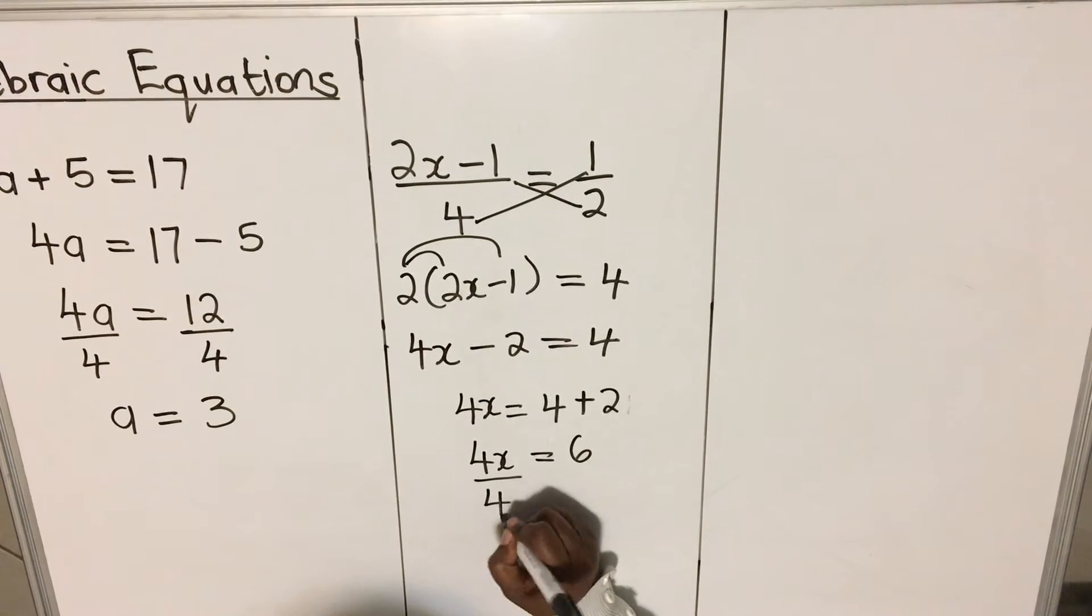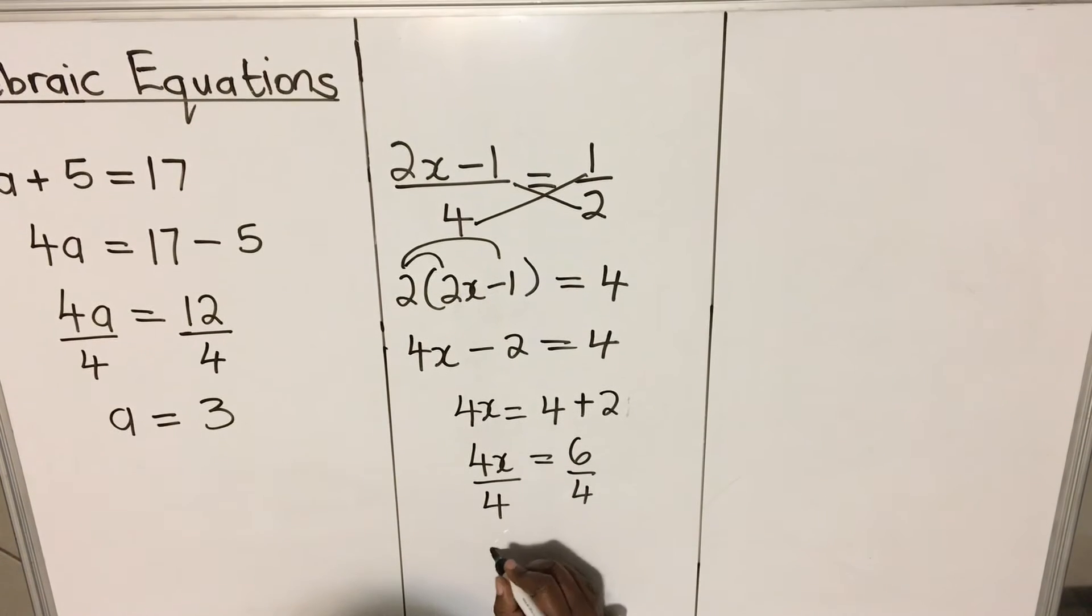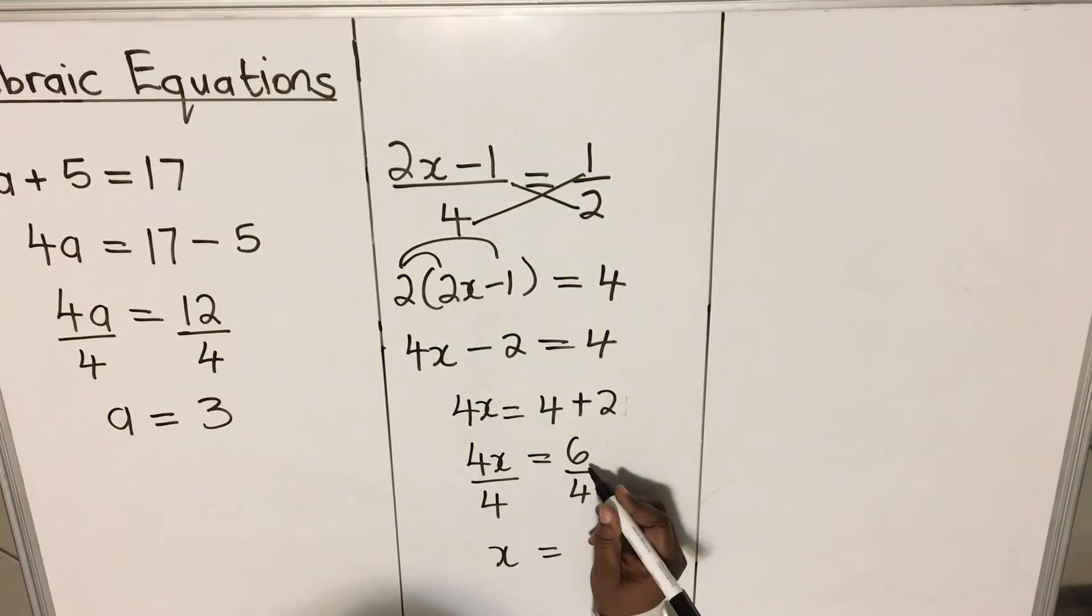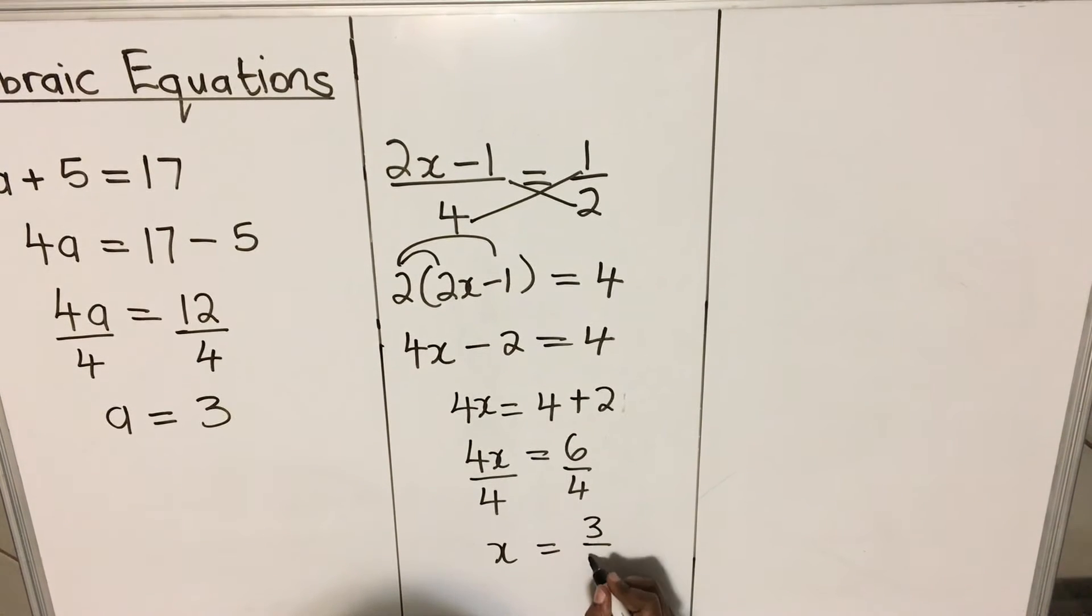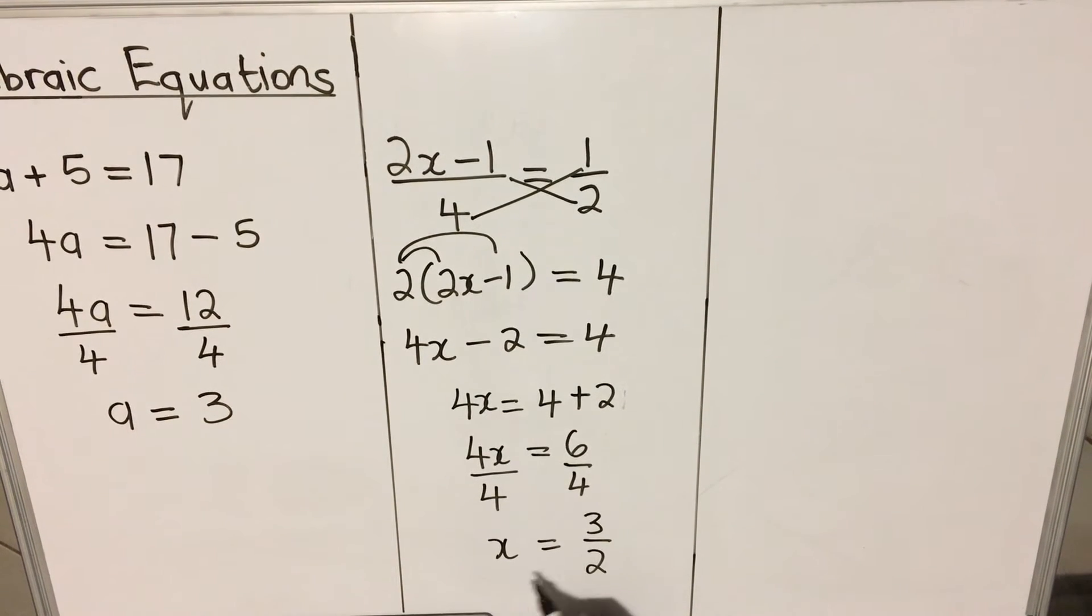Then we divide by 4. Divide by 4. Our x is equals to 2 here goes 3 times over 2. This is our answer.